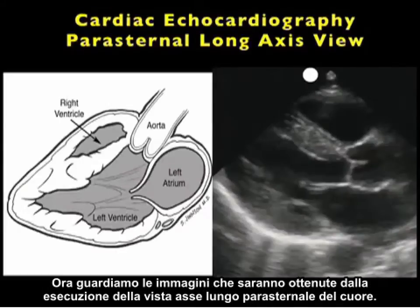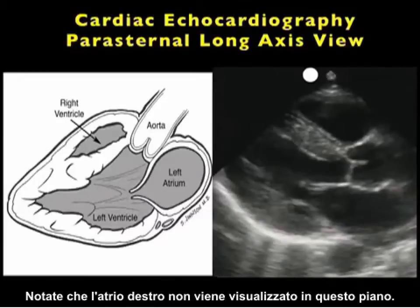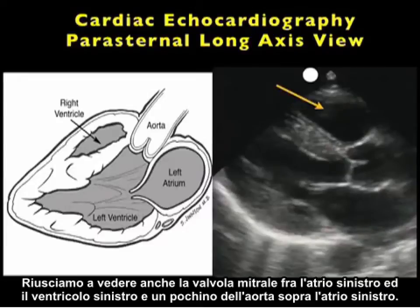Now let's take a look at the images we'll obtain by performing the parasternal long axis view of the heart. Here's a nice pictorial to the left, and what we see is that the most superficial structure will be the right ventricle. Notice that the right atrium is not seen from this plane. Directly posterior to the right ventricle will be the left ventricle, and to the right of the left ventricle will be seen the left atrium.